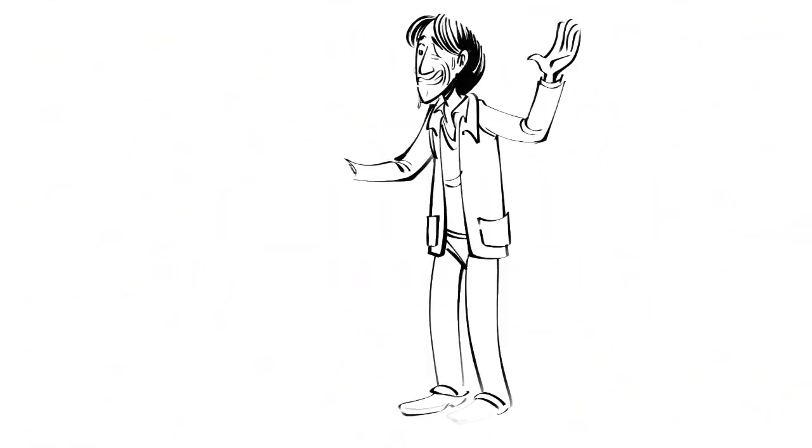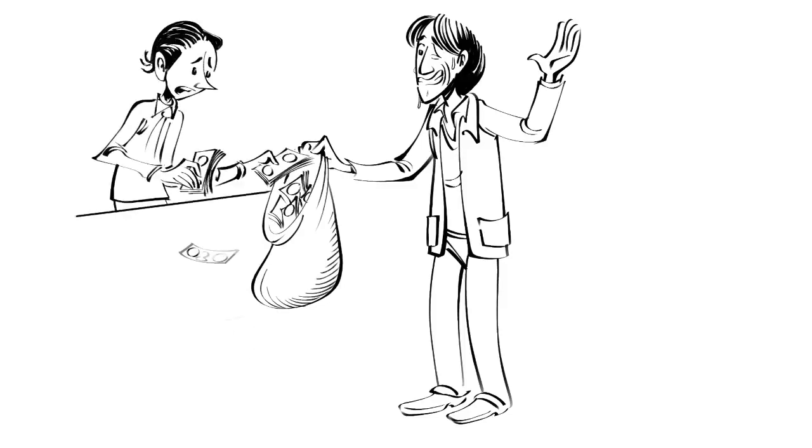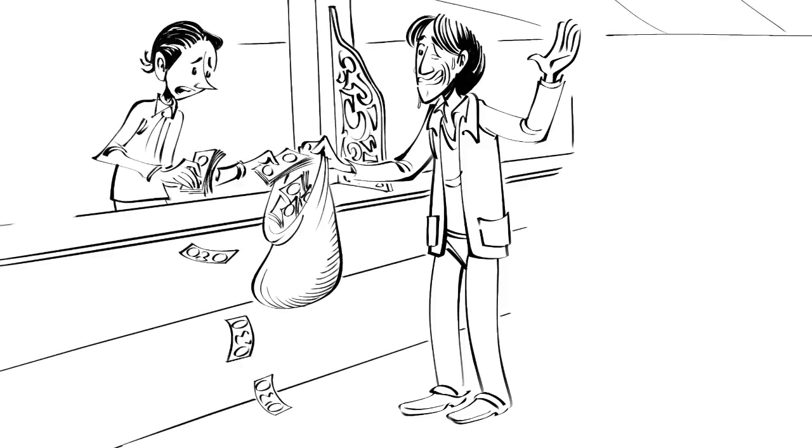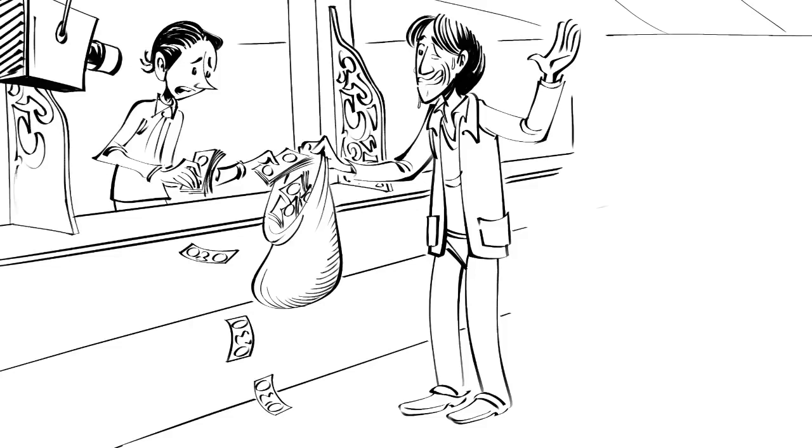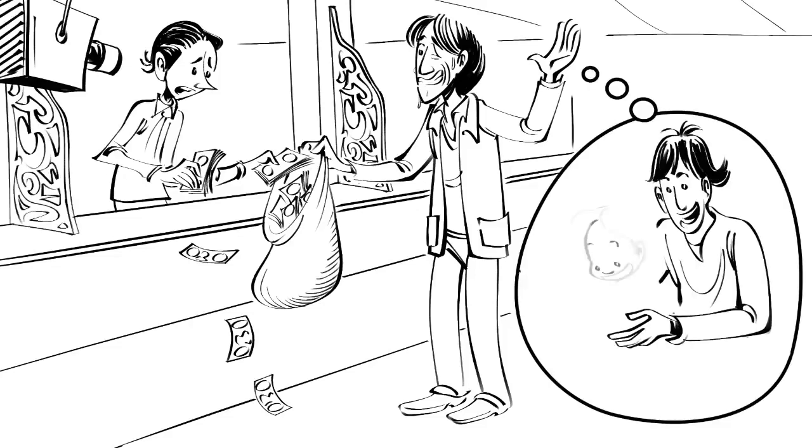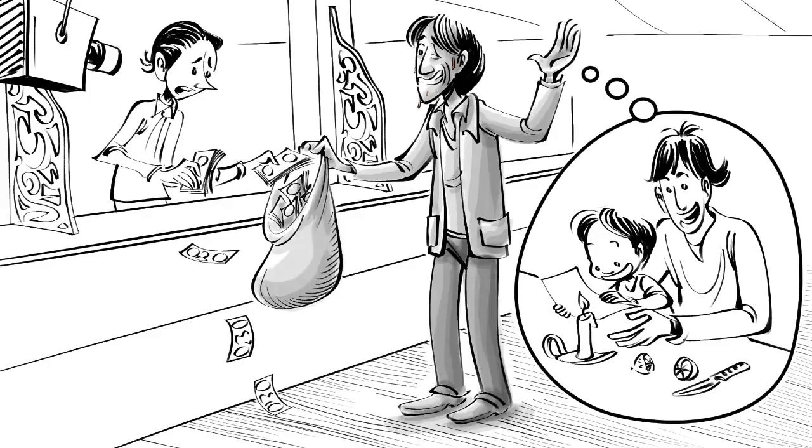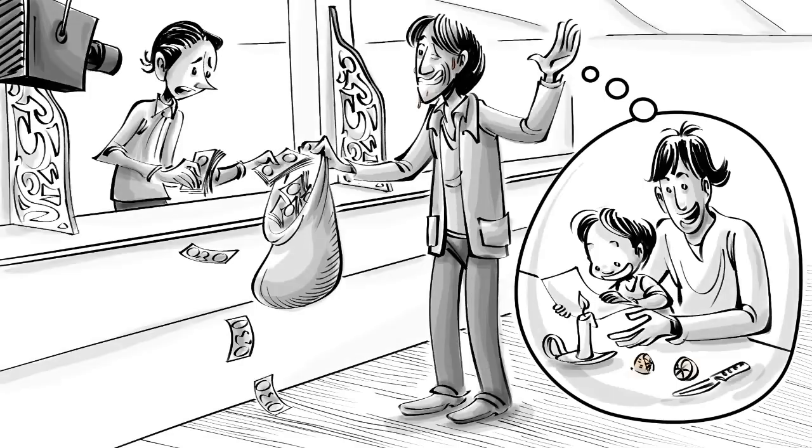On April 19, 1995, MacArthur Wheeler robbed a bank with his face glazed with lemon juice, believing the juice would make his face invisible to the surveillance cameras. He thought so because lemon juice works as invisible ink on a piece of paper.